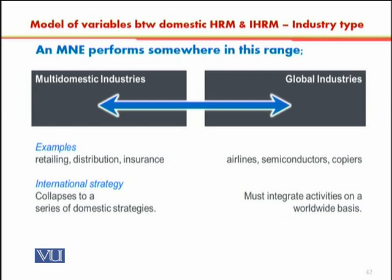The second type is a global industry — one which has an overarching framework and must integrate activities on a worldwide basis. For example, an airline is not operating in a domestic market; an airline has to operate in an international market. They cannot be domestic; they have to be global. So if you are working in a global industry, you will have to be more conscious about integration between your human resource function.